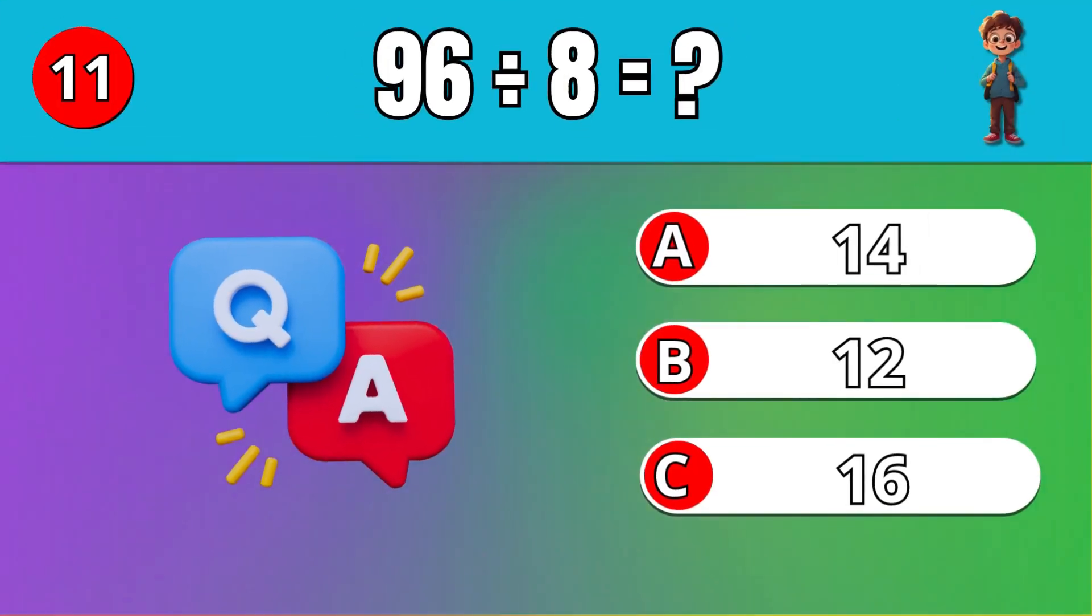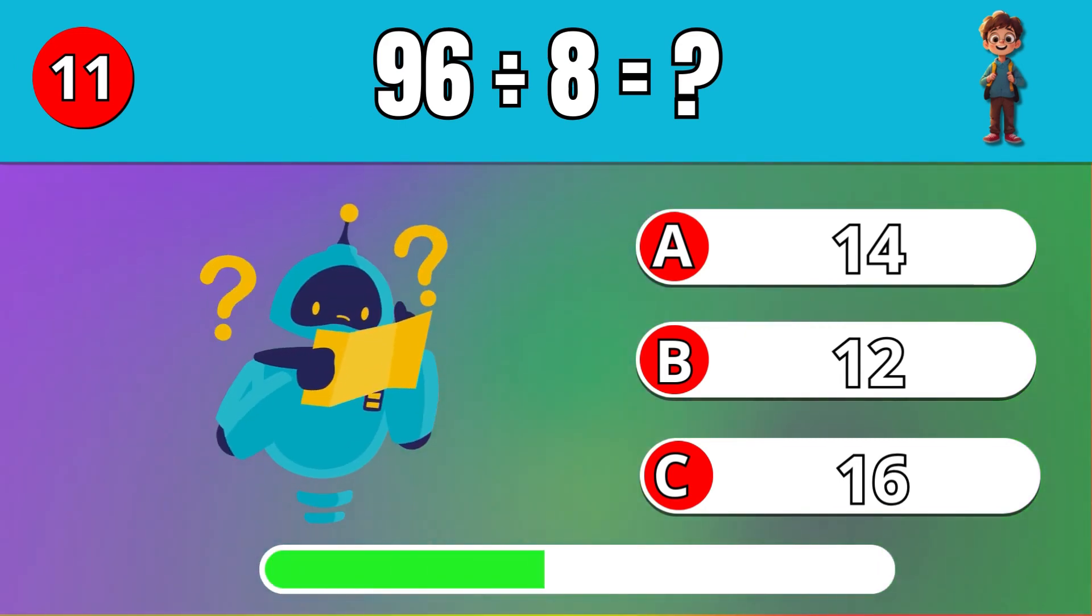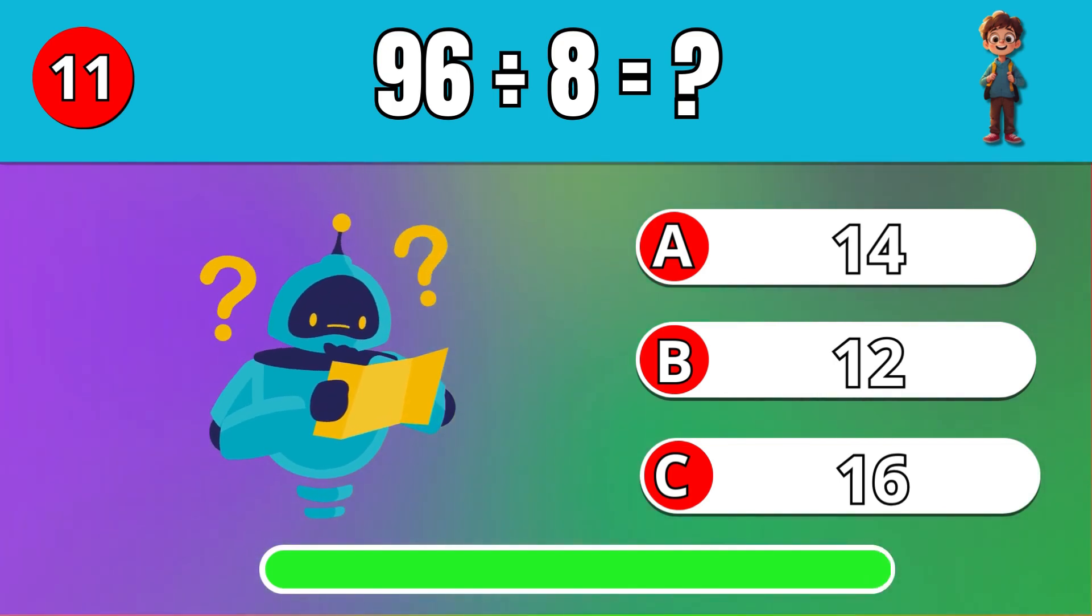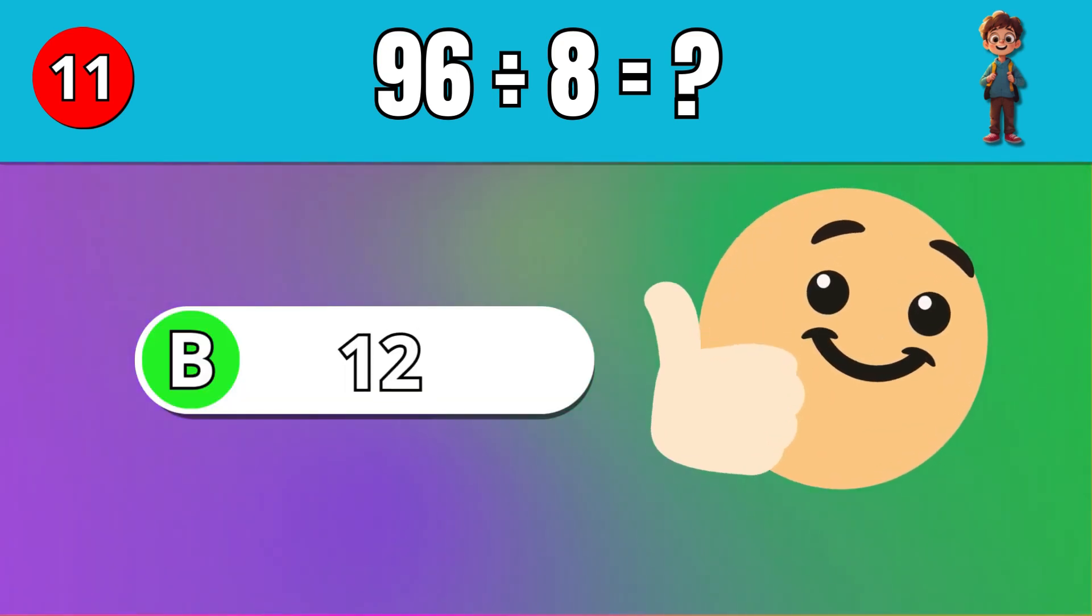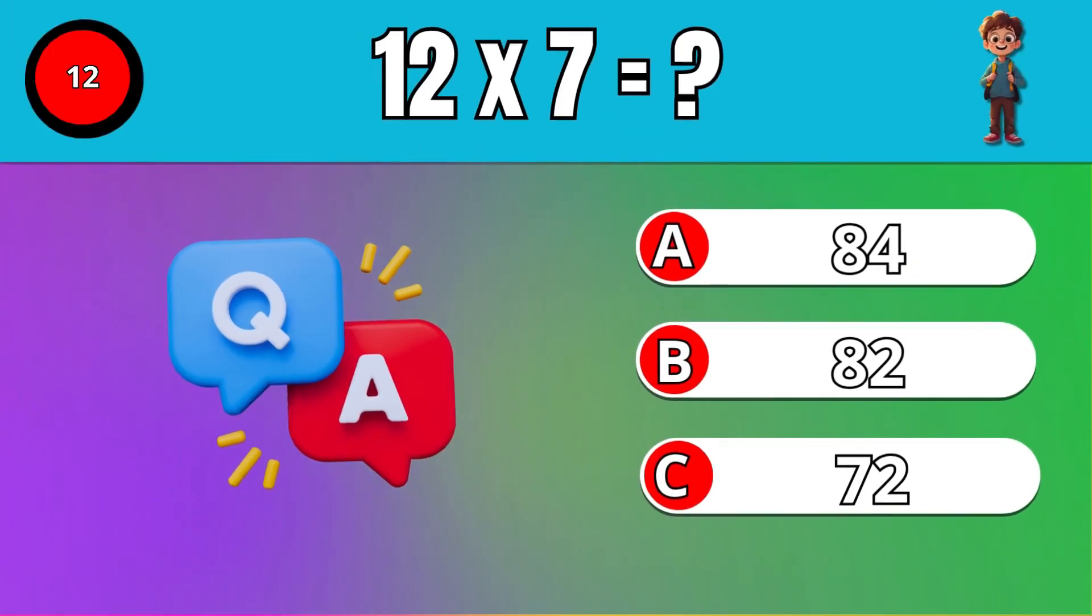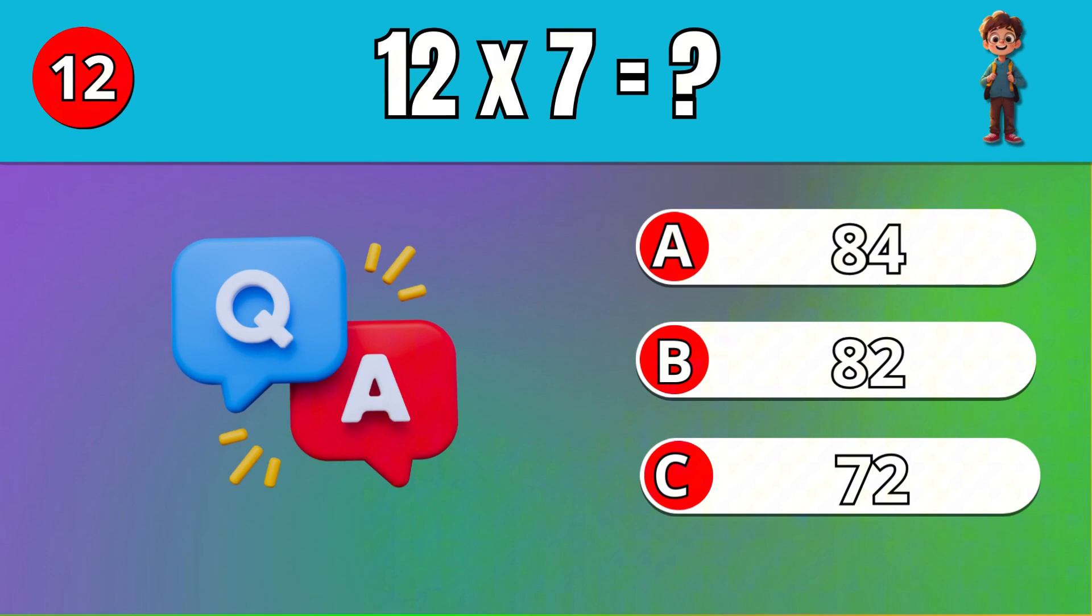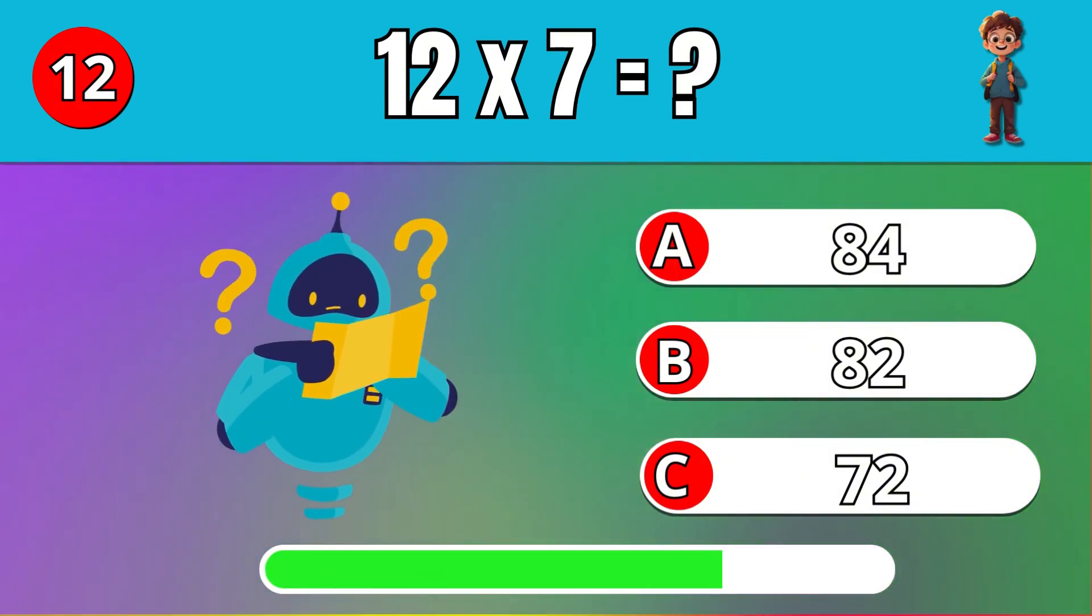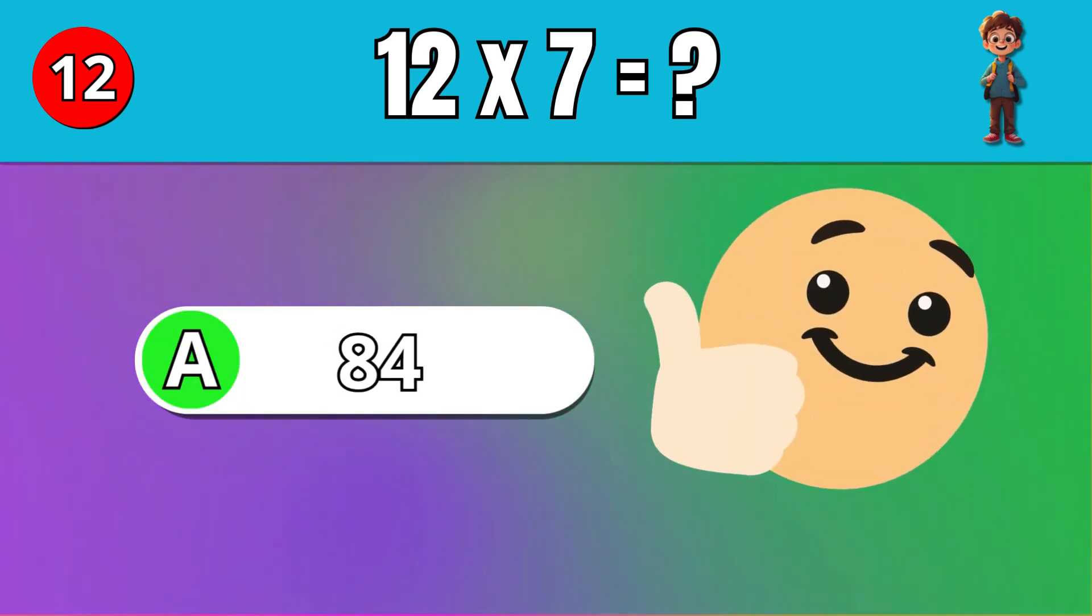What is 96 divided by 8? B, 12. What is 12 times 7? A, 84.